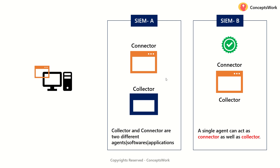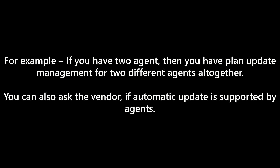For obvious reasons, you should choose the solution where only one agent is required, because the answer is simple — it reduces a lot of administrative overhead. For example, if you have two agents, you have to plan update management for two different agents. With just one, it is much easier. You can also ask your vendor whether the agents support automatic updates. So these are the three things to keep in mind: how many agent types are there, whether a single agent can act as both collector and connector, and whether agents support automatic updates.